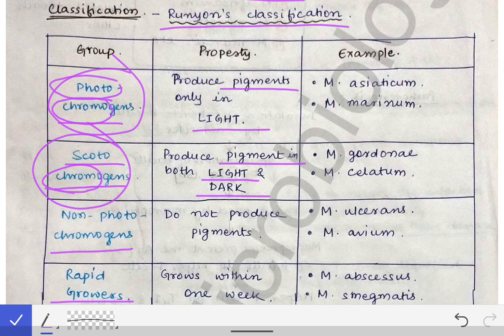Non-photochromogens are not very interested in producing pigments — they are lethargic about pigment production. Rapid growers are those which grow very rapidly, within one week.